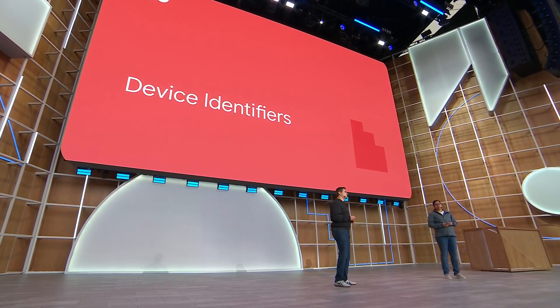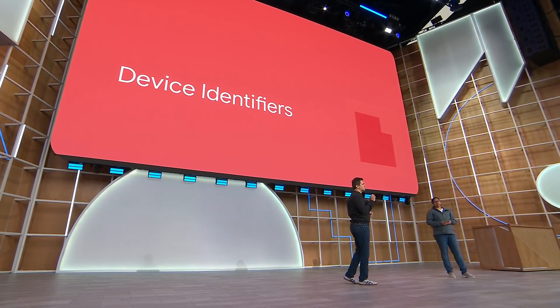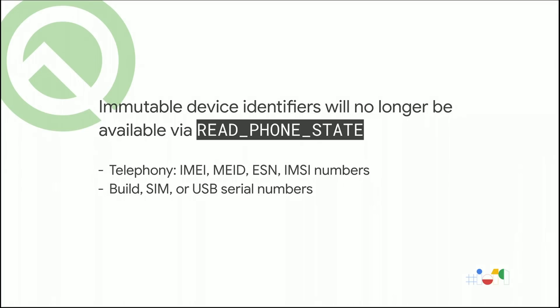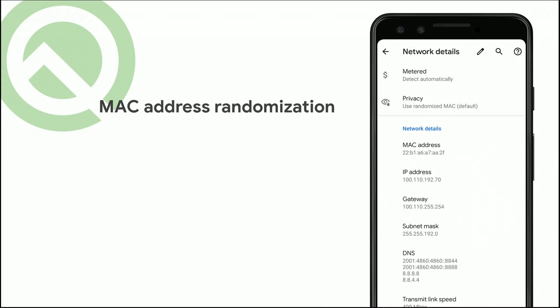Another area we focused on was device identifiers. In Android Q, we're locking down hardware-based device identifiers. Instead of hardware device identifiers, you need to use software-based, user-resettable device identifiers — this is a much more privacy-friendly solution. We're also randomizing MAC addresses. This feature shipped in Android P as an experimental feature under developer options, using different random MAC addresses when the device connects to different networks. Now we're bringing this feature mainstream, available to all apps all the time.